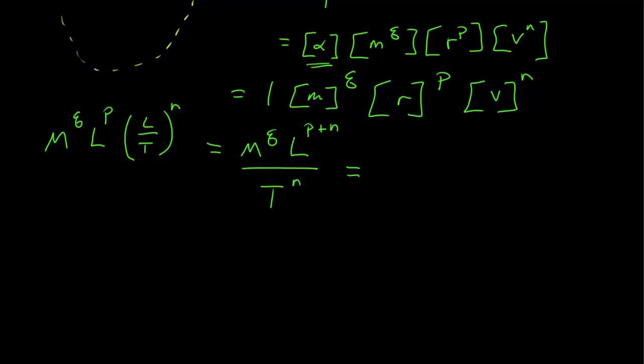And this must equal the dimension of force, which we know from above is a mass to the first power, length to the first power, divided by time to the second power. And since I have length and mass as both numerators and the time in the denominator, I can set the powers equal to each other. I have this power is equal to this, etc.